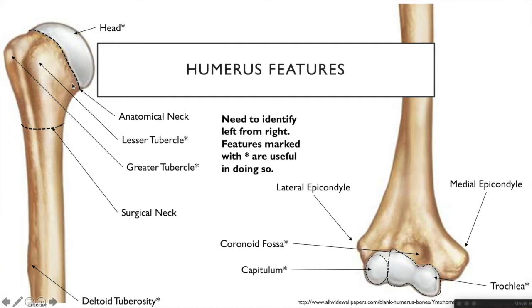Between the head and the tubercles is the anatomical neck, which defines the boundary of the head from the rest of the humerus. There are actually two necks on the humerus: the anatomical neck, which is thicker, and the surgical neck, which is found after the greater and lesser tubercles and is thinner.